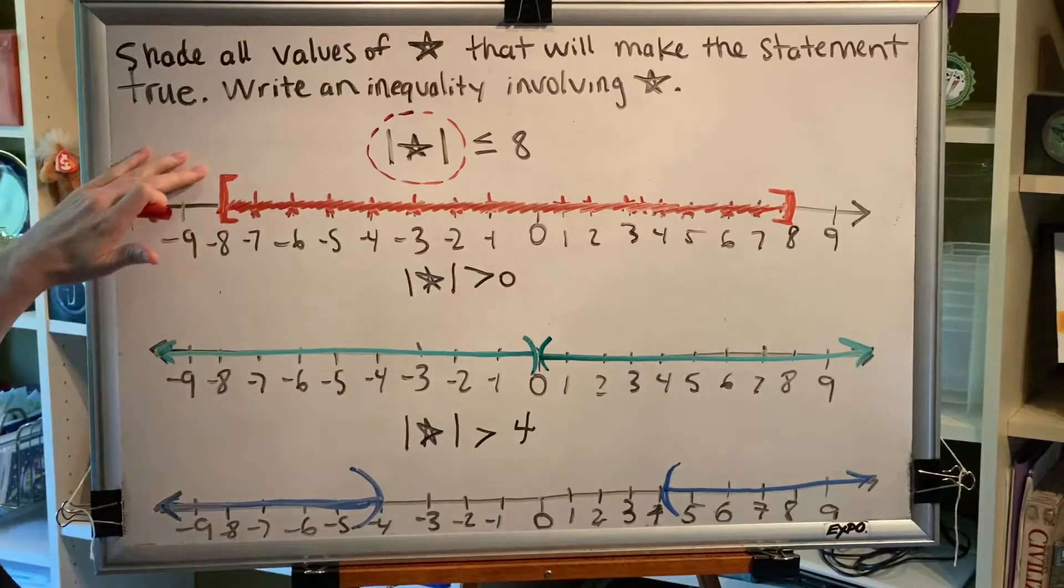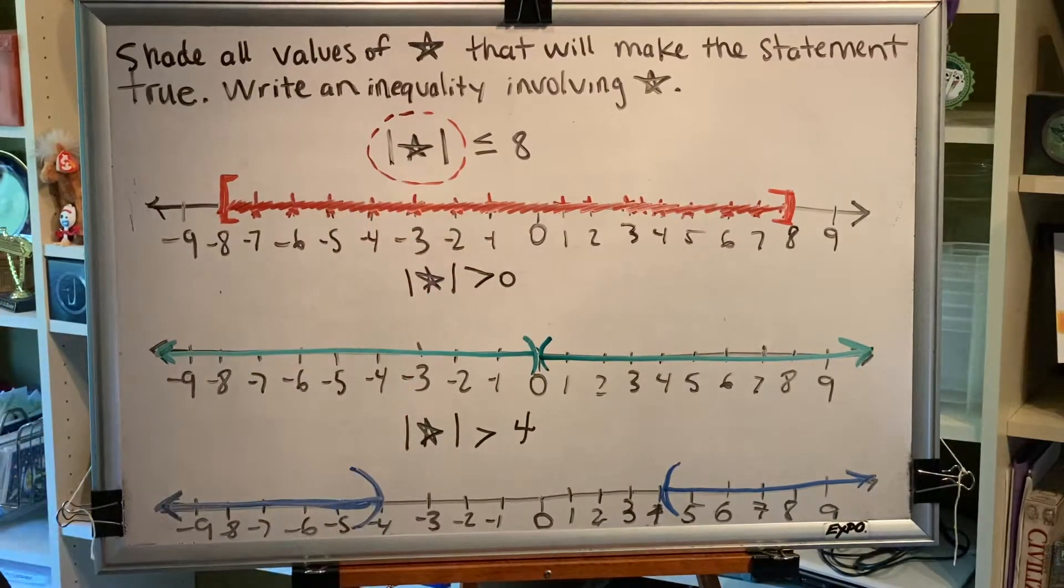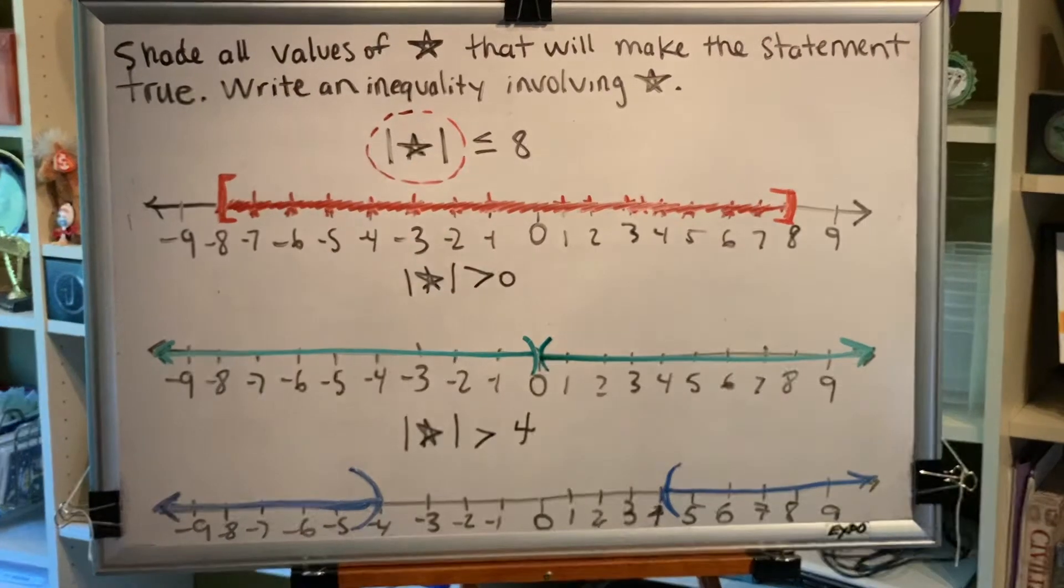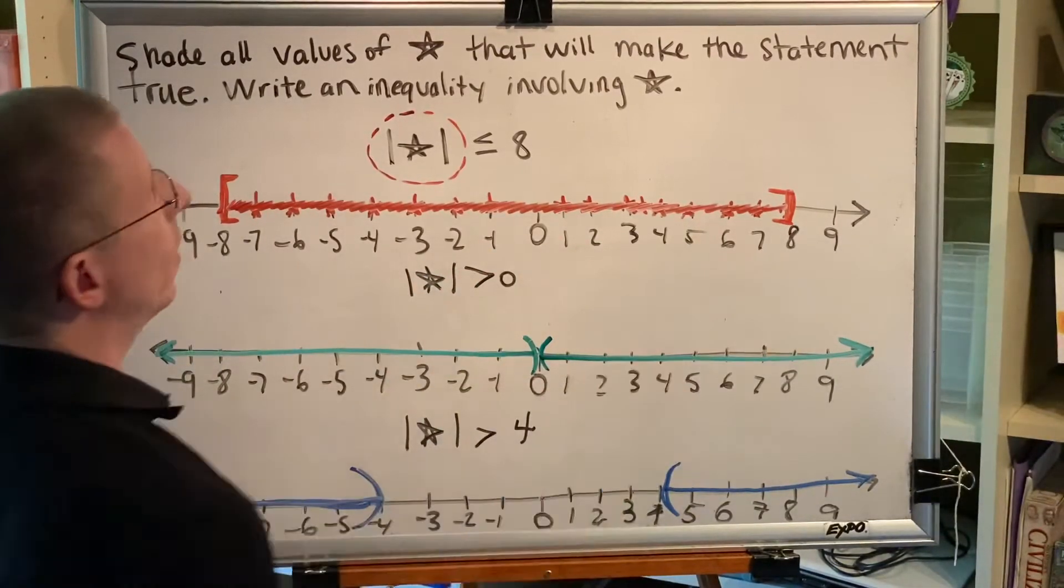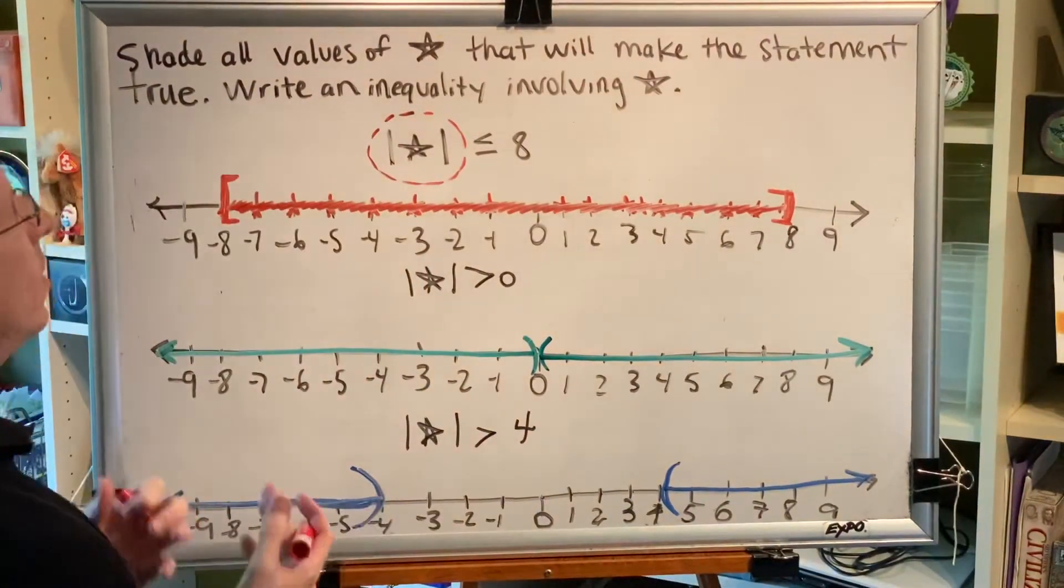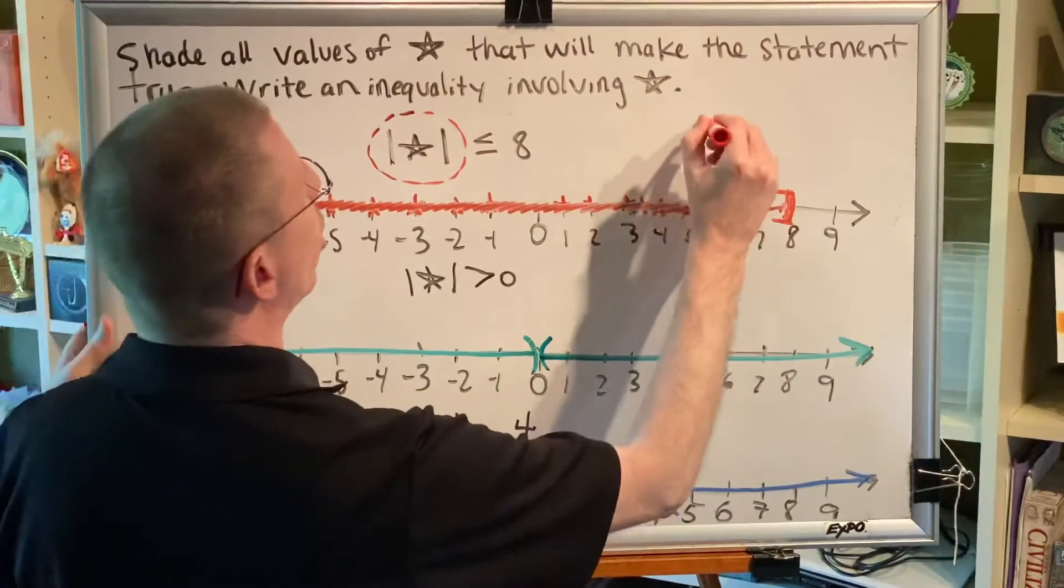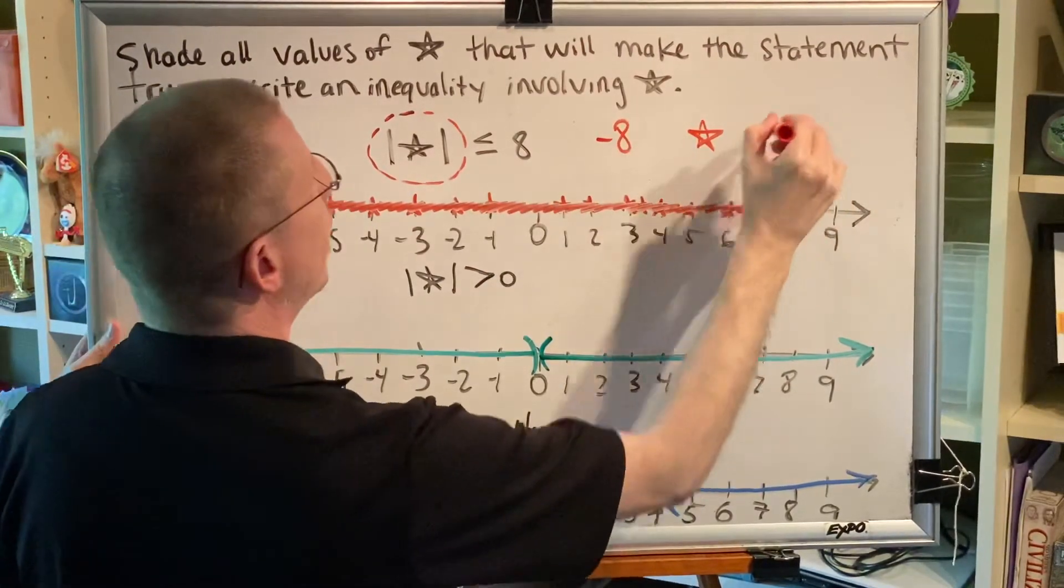Let's talk about this first number line graph. X, or in this case star, represents the shaded values. In other words, star can be any number in between negative 8 and 8. The most important word I said in that sentence was between. This is a between type inequality where star is in between negative 8 and 8.